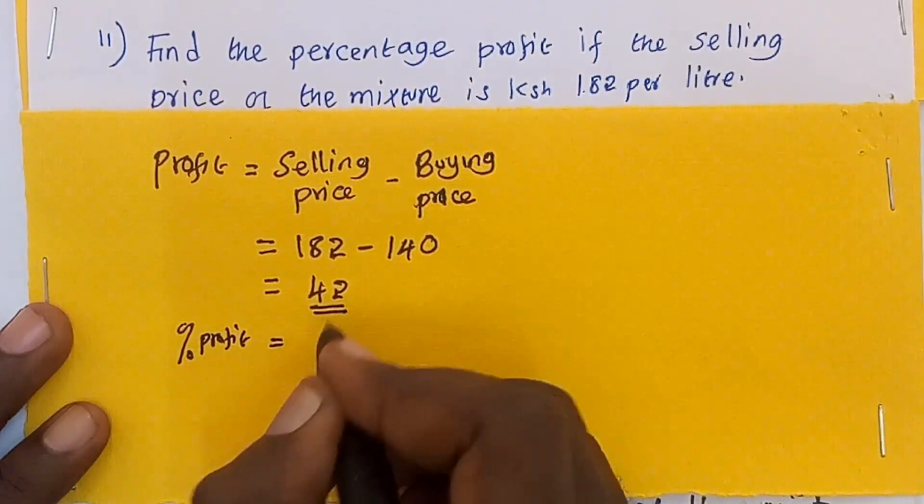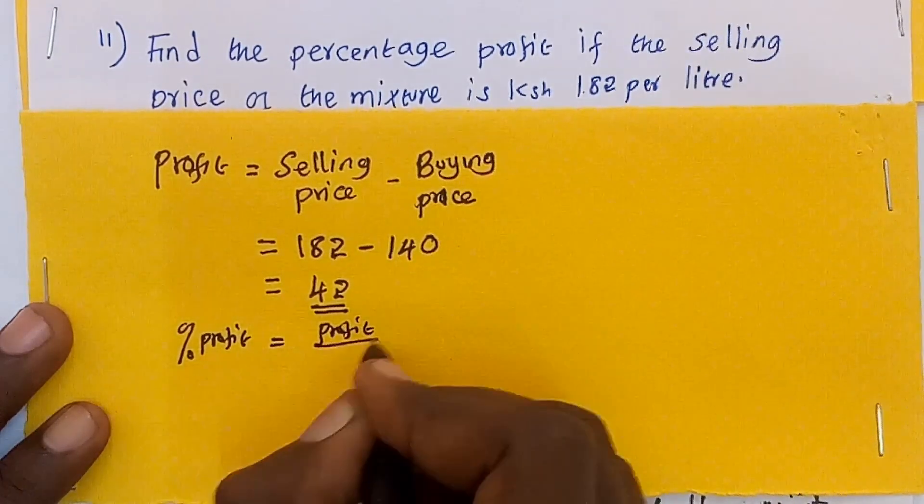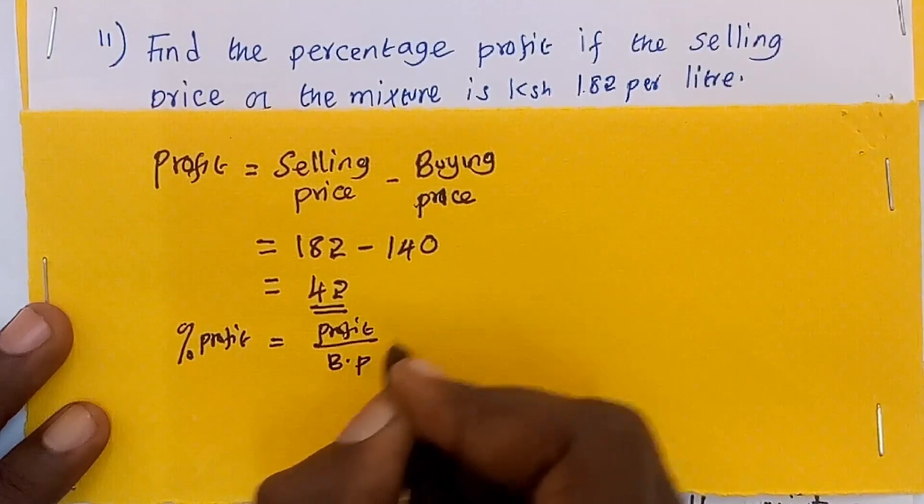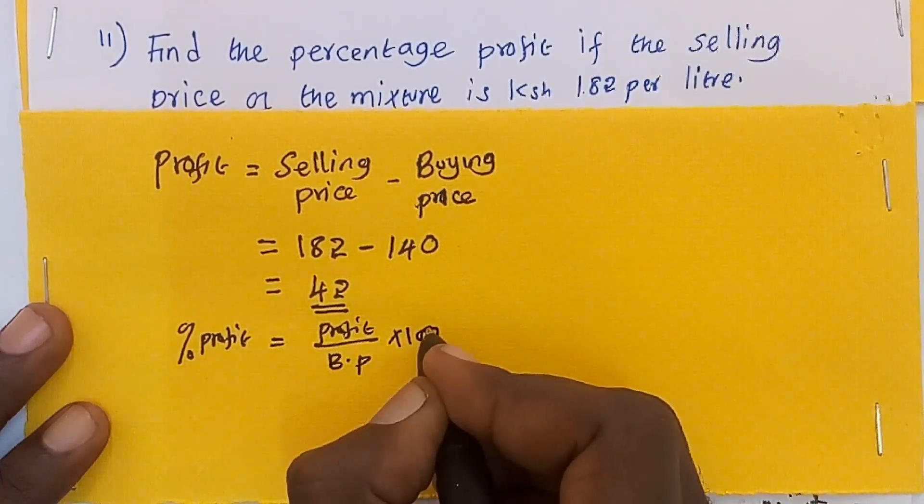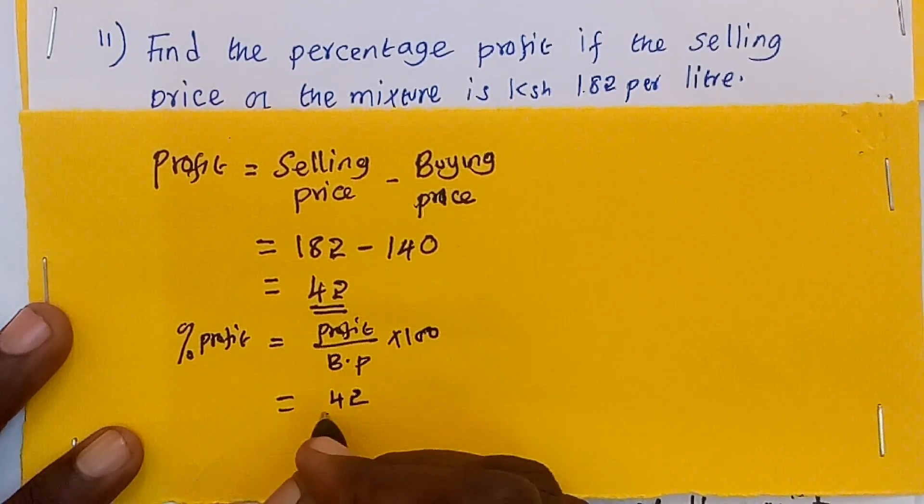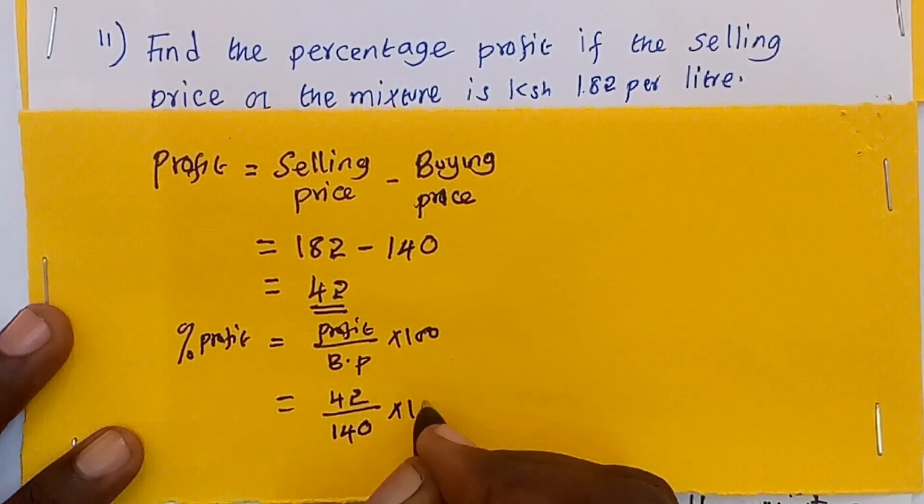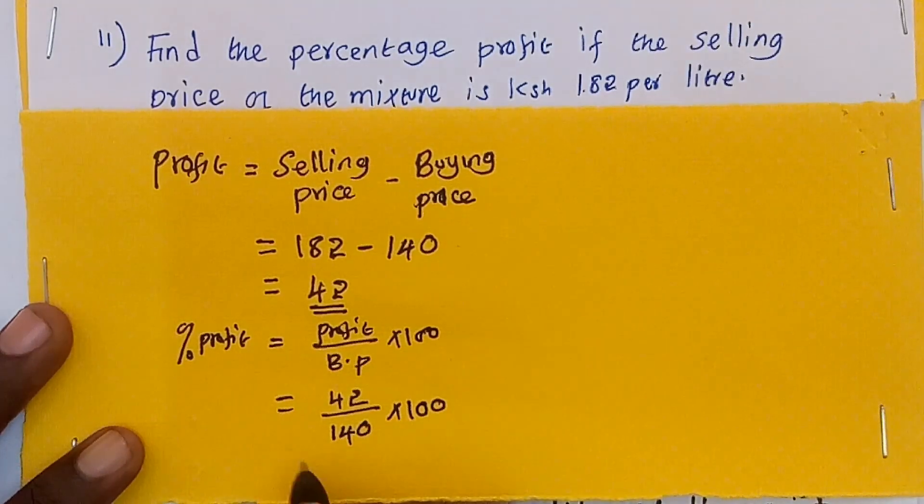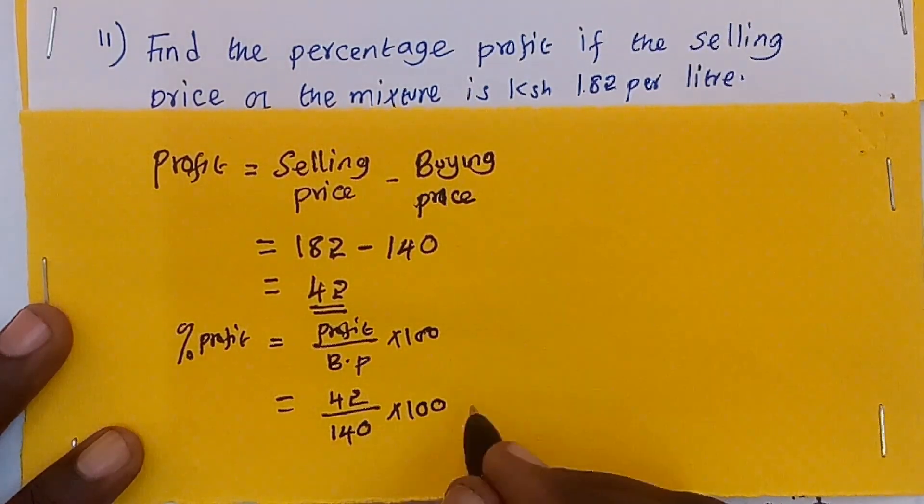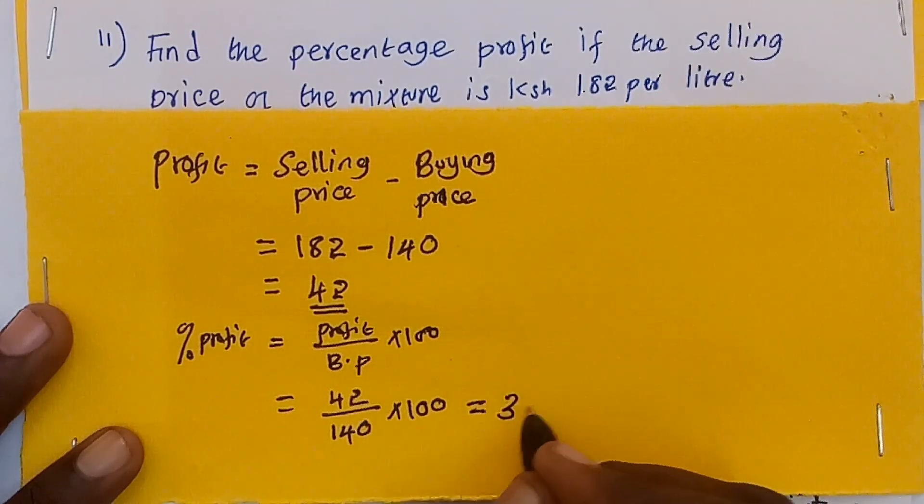Percentage profit is equal to profit over the buying price or the cost price times 100. The profit, we have 42, over the cost price which is 140, times 100. And this we get as 30%.